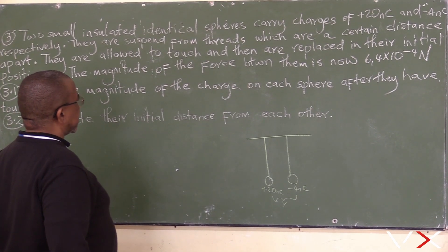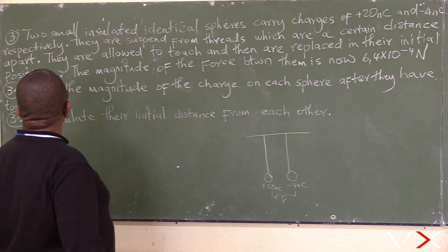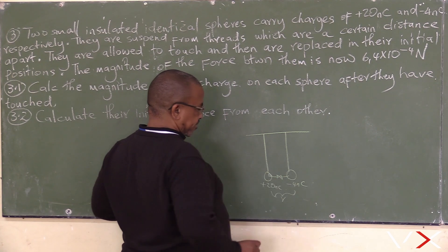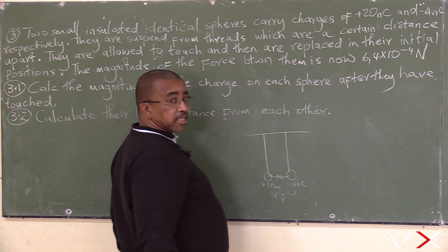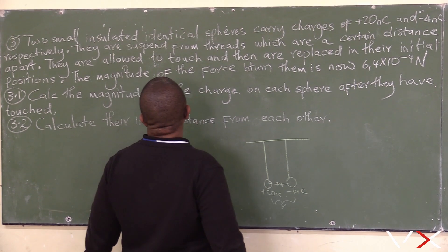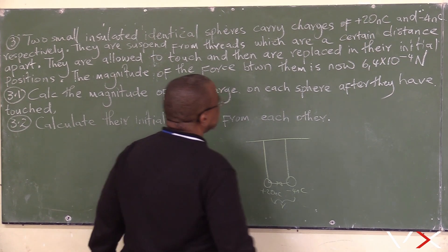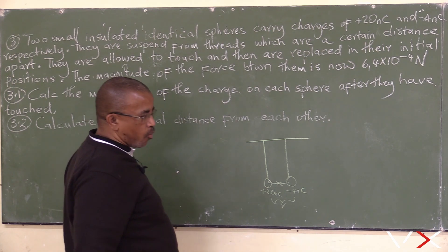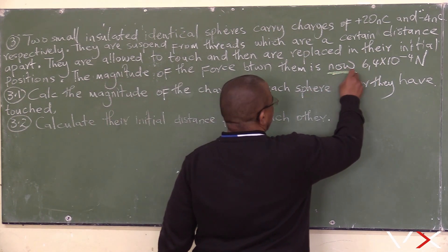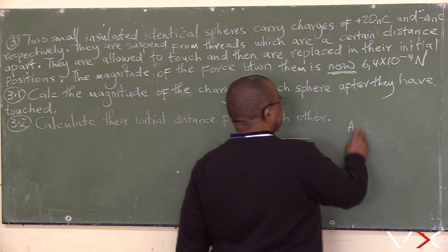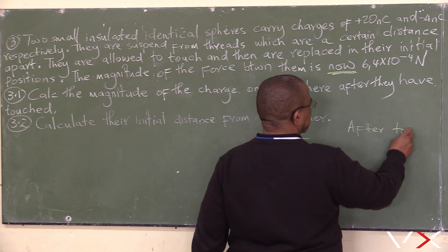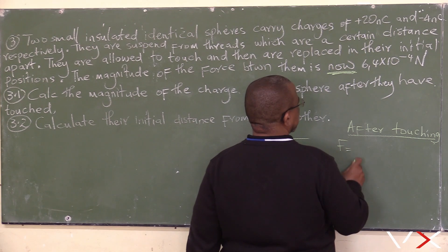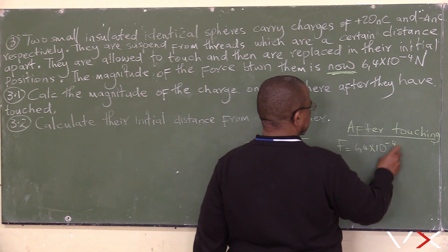They are allowed to touch and then replaced in their initial position. When they touched, there was equal distribution of charge. The magnitude of the force between them after touching is 6.4 times 10 to the power of minus 4 newtons.